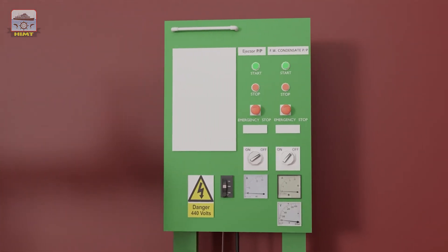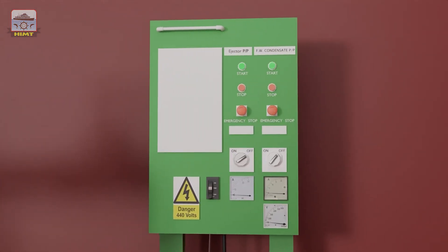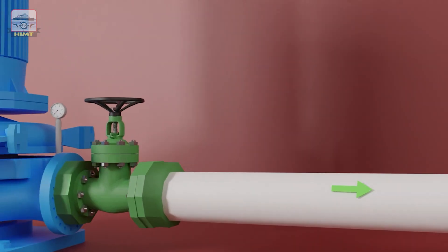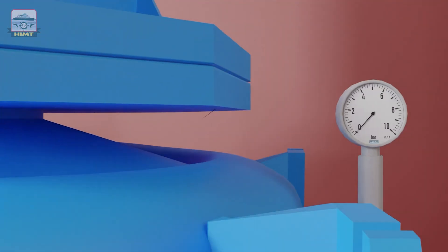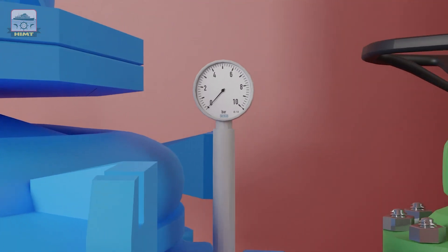Here we have the electrical panel which is used to start the ejector and distillate pump. Various indicating instruments are also fitted to monitor and assess the system's performance. This is the compound gauge at the ejector pump suction side. This is the pressure gauge at the discharge side of the ejector pump.